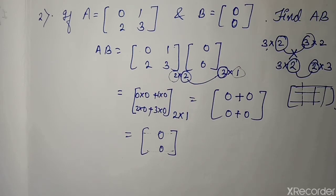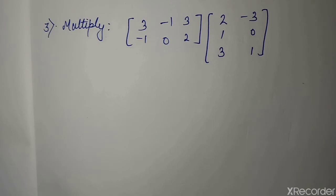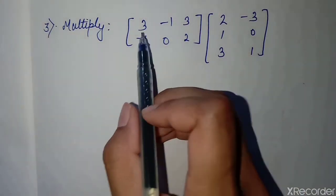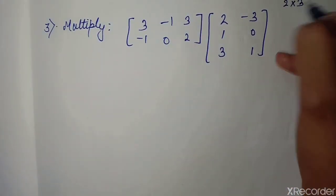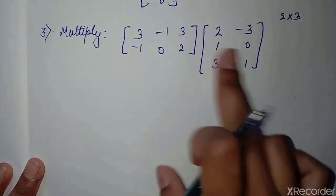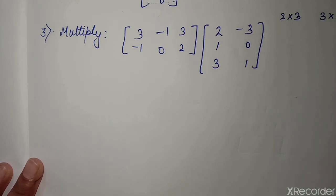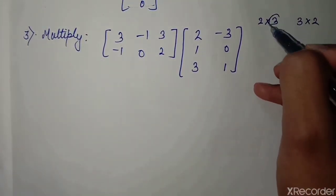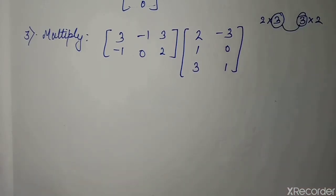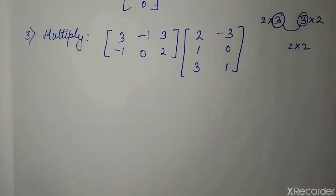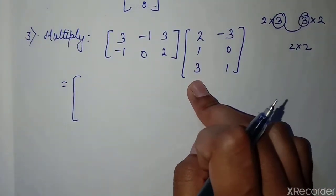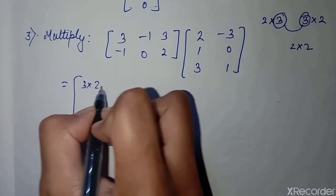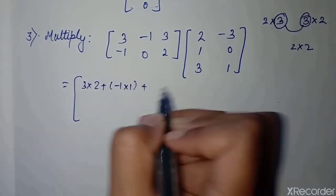Now the next question: we have two matrices to multiply. First we check the order — the first matrix has 2 rows and 3 columns, so it is 2 into 3 order. The second matrix has 3 rows and 2 columns, so it is 3 into 2 order. The column number of the first equals the row number of the second, so multiplication is possible, and the resulting matrix will be 2 into 2 order.